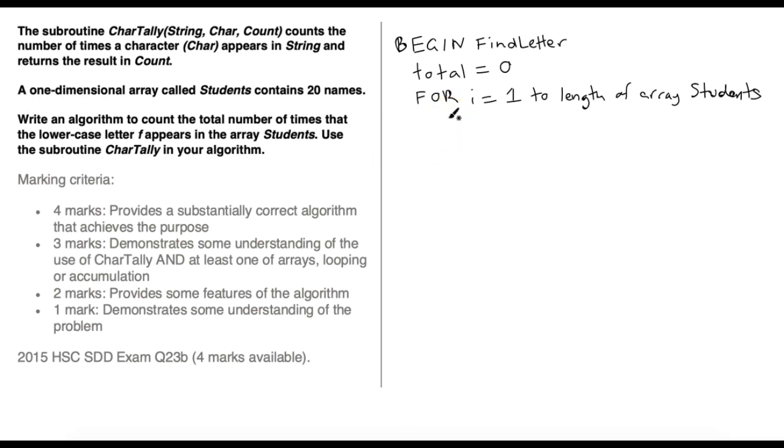Now in each iteration of this loop for each name that we're getting from the array, we need to use the char tally subroutine. So first thing we're going to have to do is reference that subroutine. So let's say char tally. And then remember, we have three parameters here inside the brackets. First one is the string that we're going to check, so the student's name that we're going to check. And so that's going to be the student, so that's the name of the array. And to access each student's name, we're going to specify the index for each student, which is going to be I. So students I, when the for loop counter is set to one, is going to get students one, or the first name in the students array.